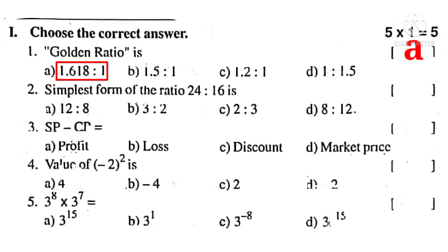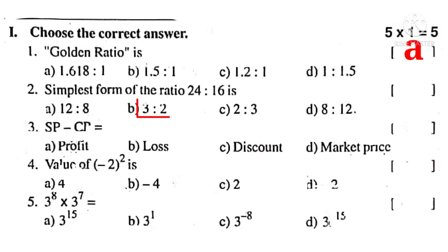Number 2: Simplest form of the ratio 24 is to 16. On simplification by 8: 8 goes 3 times into 24 and 2 times into 16. So the answer is 3 is to 2. The correct choice is B.